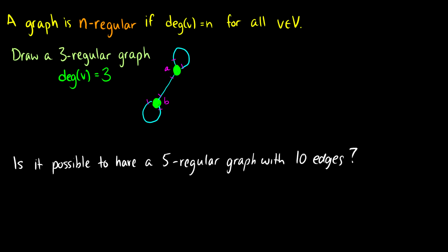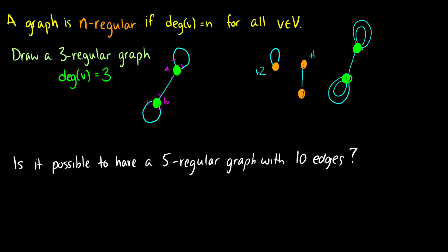Here's the trick to building regular graphs. A vertex starts with degree zero. If you want to add two to it, loop it. If you want to add one, create a new vertex and connect them — that adds plus one to each node, while a loop adds plus two. So for a five-regular graph, you can take two vertices, connect both to add one, then loop each one twice to get a five-regular graph.